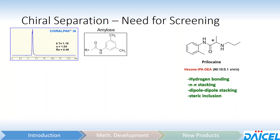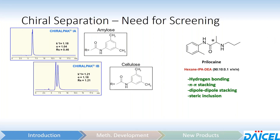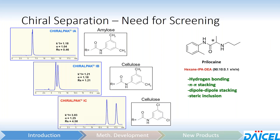ChiroPak IA — 3,5-dimethylphenylcarbamate on amylose — gives just a very partial separation. If we move to cellulose with ChiroPak IB, we now have almost baseline resolution. And if we change the electronics of the selector and go to ChiroPak IC, we now have a nice baseline resolution. The point is: if you have a molecule and a handful of columns, there is no good way to predict which column and mobile phase combination is going to yield the best separation.